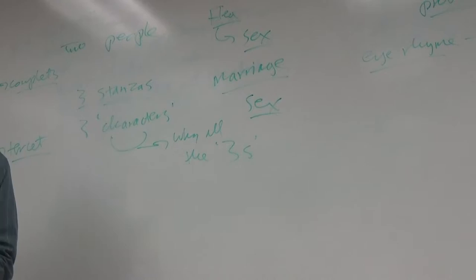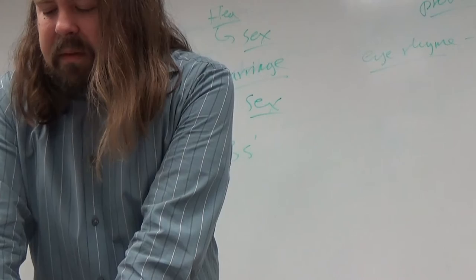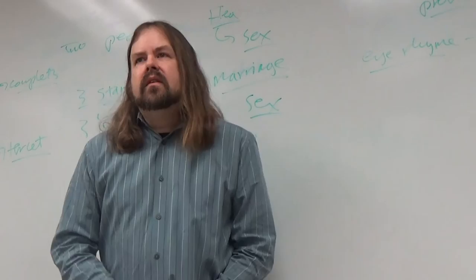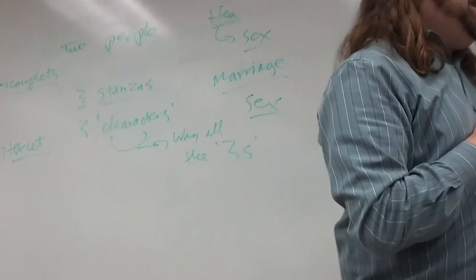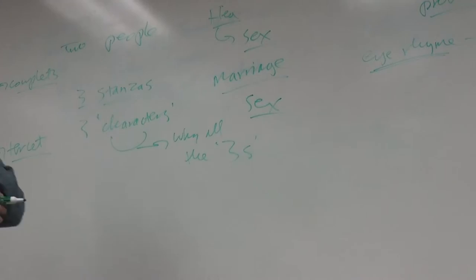So let's look at the first two lines of the second stanza here of The Flea. O stay three lives and one flea spare where we almost yea more than married are. What do we notice there? What kind of rhyme is that? Yes, spare and are don't really rhyme with each other. It's an eye rhyme. It's almost kind of a half consonance rhyme, because the two words do share that r sound at the end, but the vowel sound is completely different.